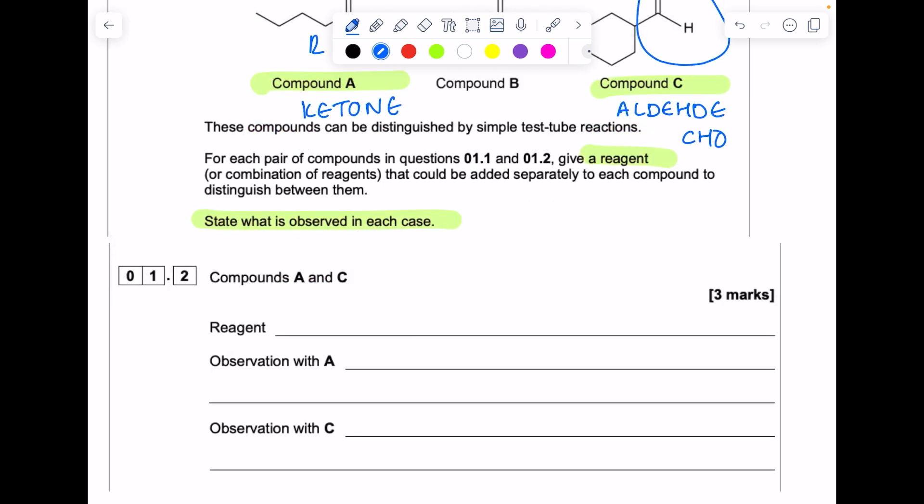So how are we going to distinguish between them? It's up to you, do you want to talk about Fehling's or do you want to talk about Tollens reagent? For some reason, I prefer Tollens. Isn't that weird that you can sometimes just prefer things for no particular reason?